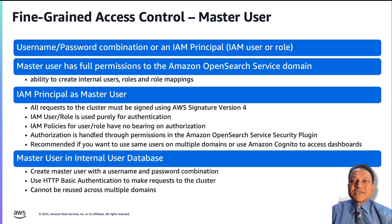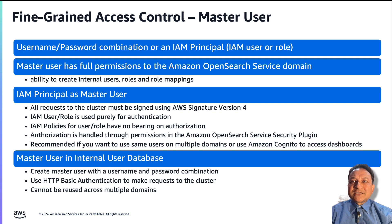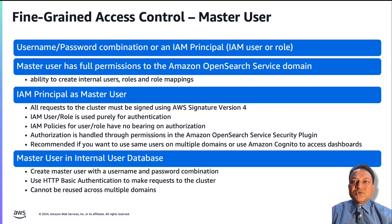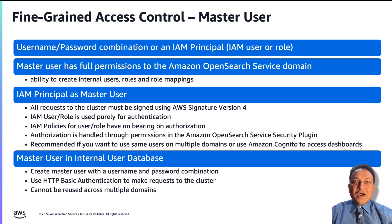There are two ways to define a master user. First, the master user can be an IAM principal. If you choose an IAM principal, all requests to the cluster must be signed using AWS Signature Version 4. Amazon OpenSearch Service doesn't take any of the IAM principal's policies into consideration for authorization — the IAM user or role serves purely for authentication. We recommend using IAM users or roles if you want to use the same users on multiple domains, use Amazon Cognito to access dashboards, or have clients that support Signature V4 signing.